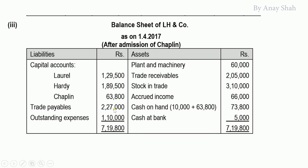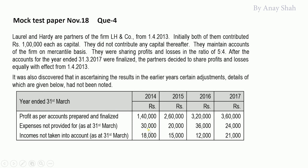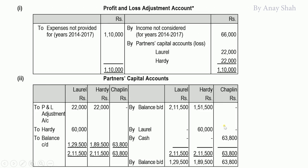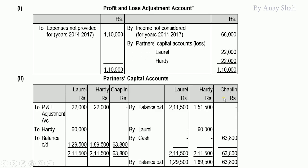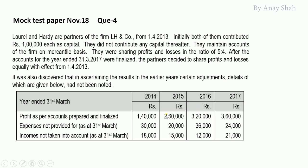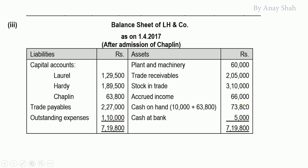Outstanding expenses: total unrecorded expenses = 1,10,000. The effect on capital accounts has already been done; since payment hasn't been made, outstanding expenses of 1,10,000 appear on the balance sheet. Similarly, accrued income of 66,000 (4 years' unrecorded income) appears on the asset side, as the other effect was already passed through capital accounts.